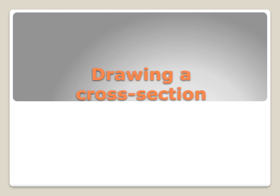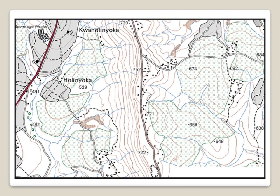We now want to see how we can draw a cross-section. In drawing a cross-section, you're going to build on the knowledge you have of how height is indicated on the topographic map. So let's look at this extract of a topographic map. Here on this map, we see height indicated by means of spot heights, and also we see the contour lines.